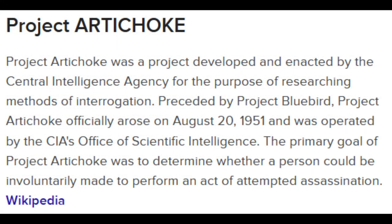Now we come to Project Artichoke. Project Artichoke was a project developed and enacted by the Central Intelligence Agency for the purpose of researching methods of interrogation, preceded by Project Bluebird. Project Artichoke officially arose on August 20th, 1951, and was operated by the CIA's Office of Scientific Intelligence. The primary goal of Project Artichoke was to determine whether a person could be involuntarily made to perform an act of attempted assassination.